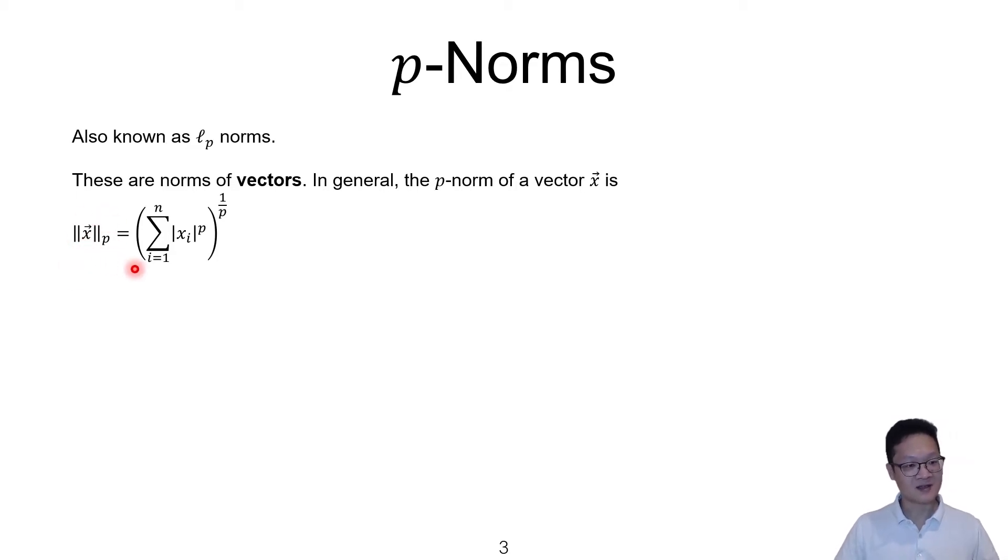So this is how we write down the p-norm, and then the p-norm is defined to be the summation of each of the components raised to the power of p. And then after you sum them up, you raise the entire thing to the power of 1 over p.